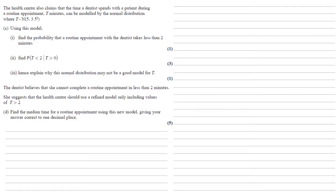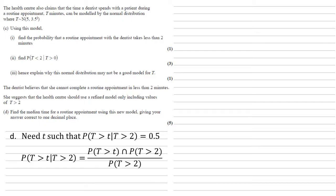The dentist believes she cannot complete a routine appointment in less than 2 minutes, and suggests using a refined model including only values of t greater than 2. For Part D we need to find the median time for a routine appointment using this new model, correct to one decimal place. We want a value of t such that P(T > t | T > 2) = 0.5, making it the median since half the times are above and half below.